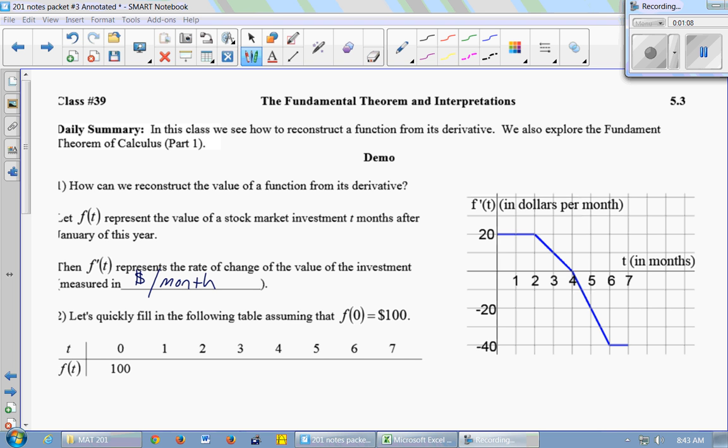So I have this graph of f'(t) in dollars per month. I need to figure out between month 0 and month 1, what does that tell me about the value of my investment? This is not a graph of the value of the investment itself. This is a graph of the rate of change. This says over the first month, the investment changed by $20 per month.